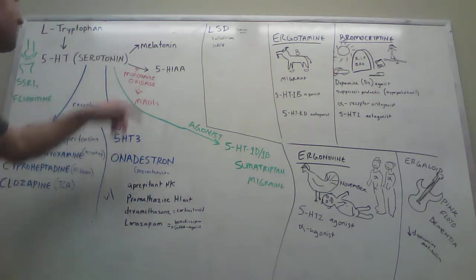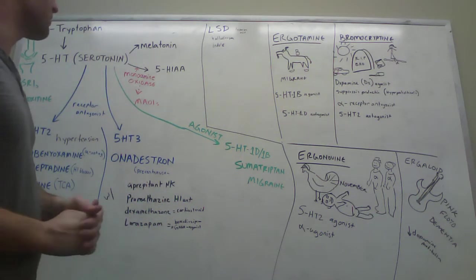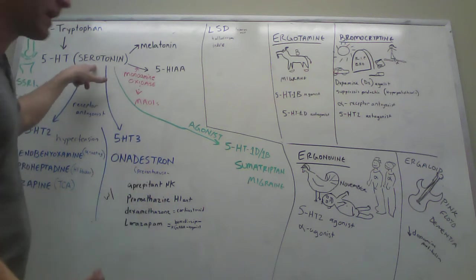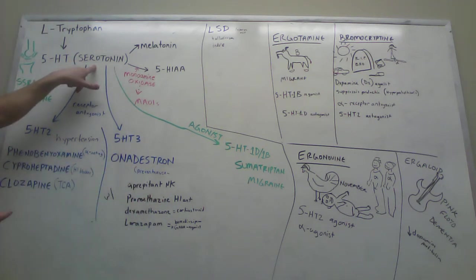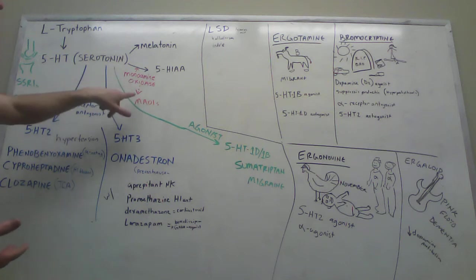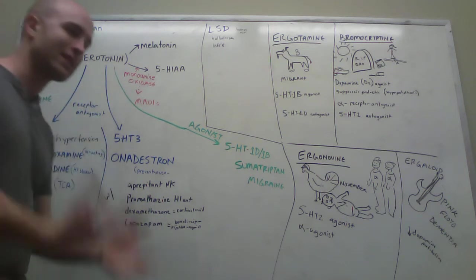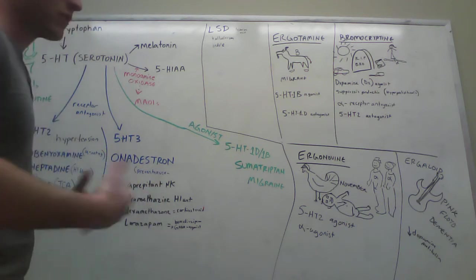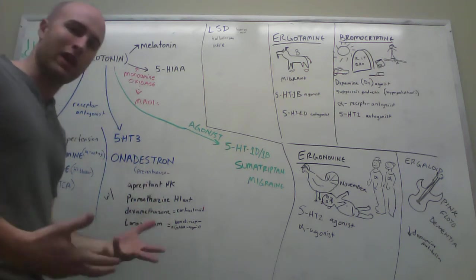The other thing they do is give people monoamine oxidase inhibitors because it's monoamine oxidase that breaks down serotonin. So you give someone an MAOI, it's going to make it so they have less serotonin broken down, so they have more serotonin in their body. More serotonin, they're not as depressed, they feel happier.